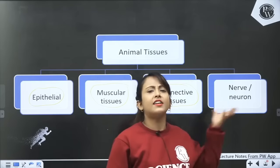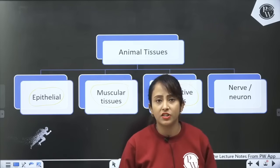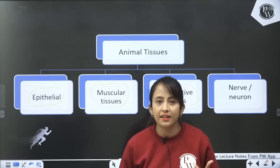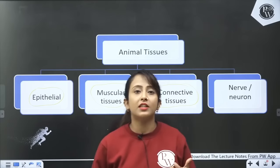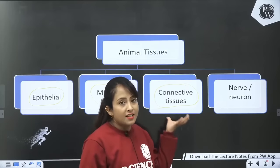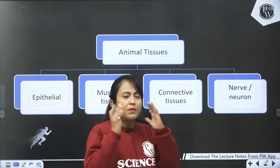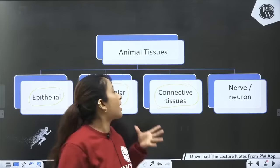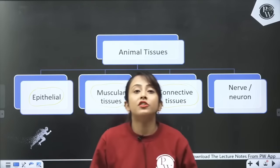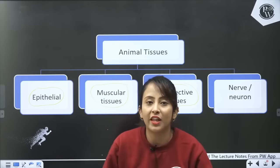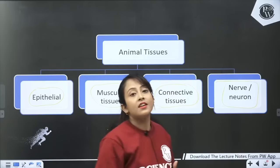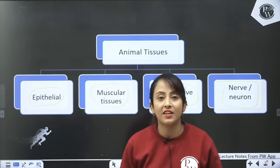Connective tissues can be very different — some can be fluid, some can be loose type of connective tissues, some can be special. We are just trying to understand how many different types of animal tissues there are. And the last one is the nervous tissue or neuron.